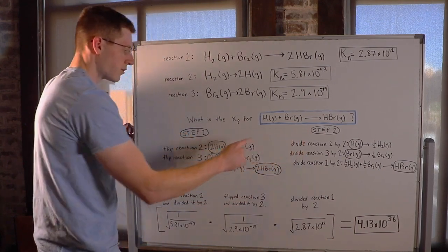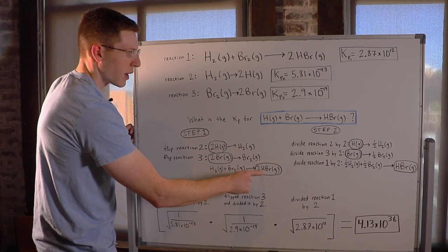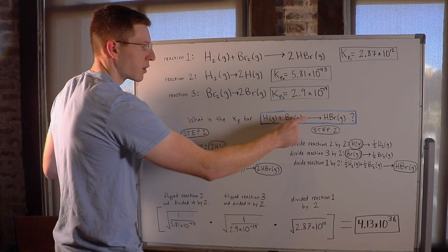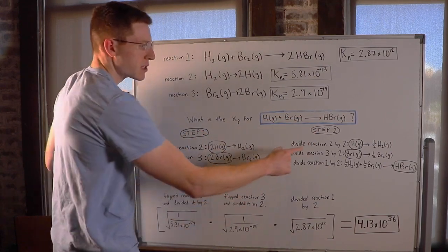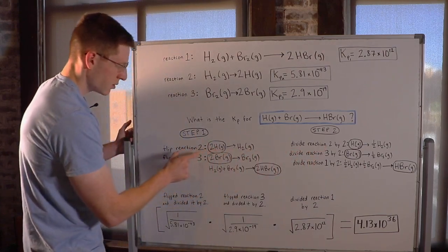And then in step 2, I realized that I had a 2H, 2Br, and 2HBr, but I only need a 1 in front of each chemical here. So I divided the reactions by 2.